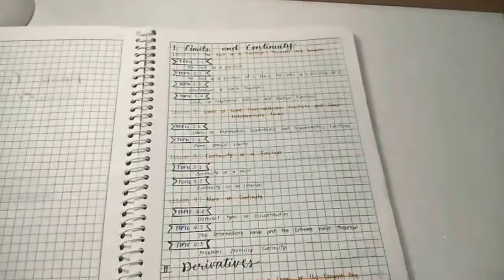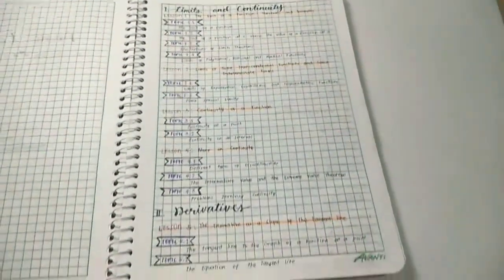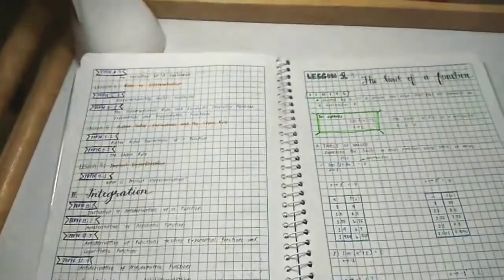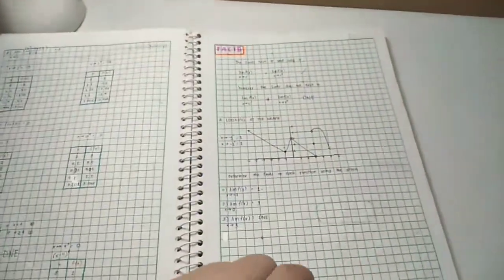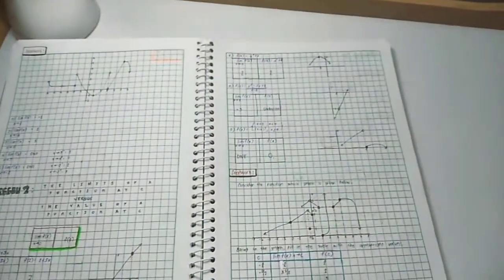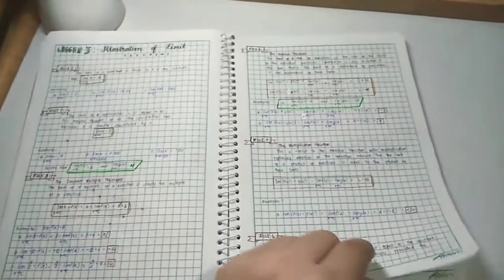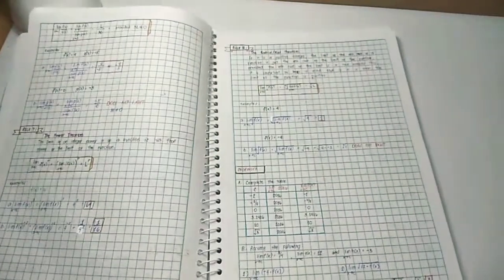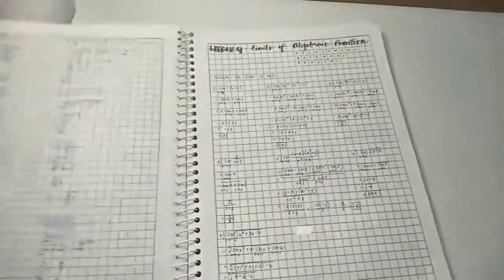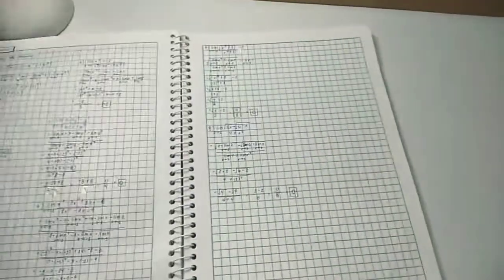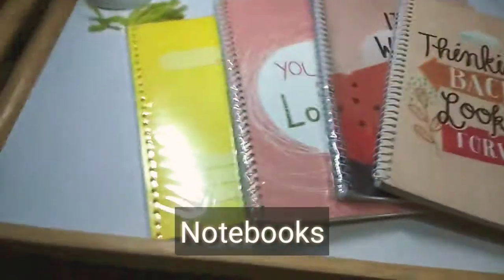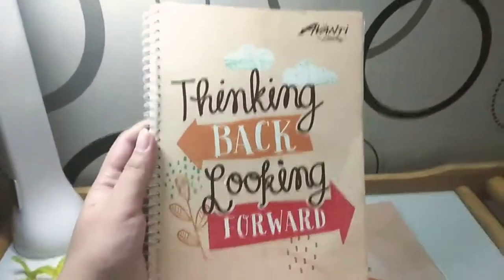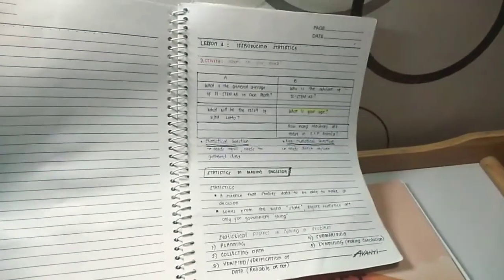Next is this notebook, my basic calculus notebook. It's just like my statistics notebook. Next are these four notebooks. First is this notebook which I wrote my statistics notes.